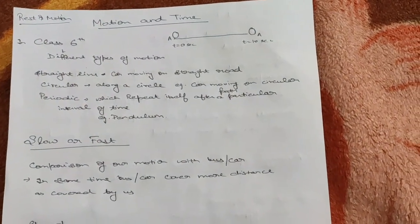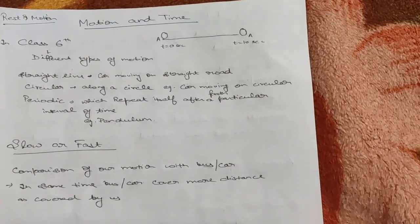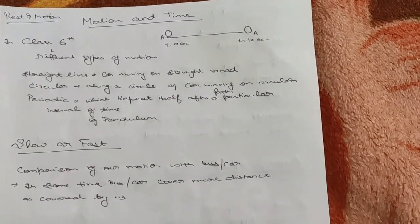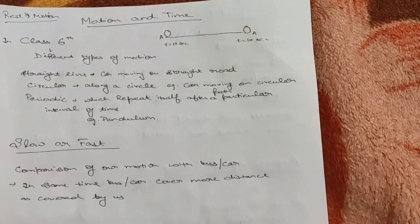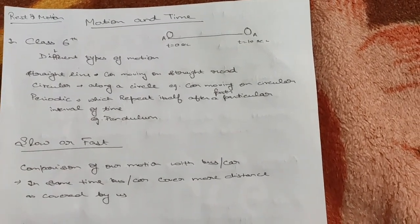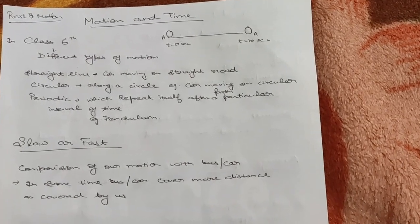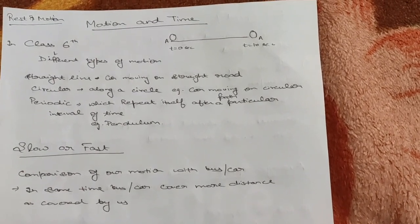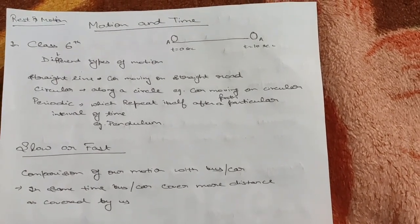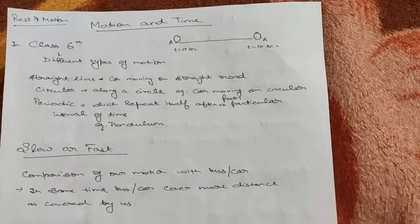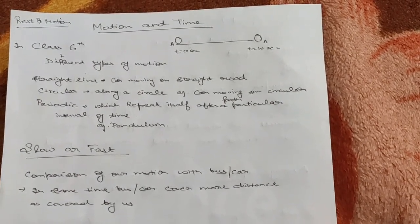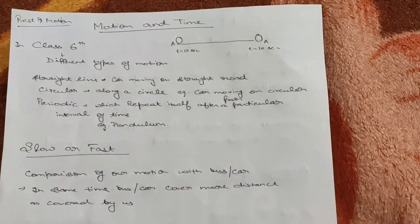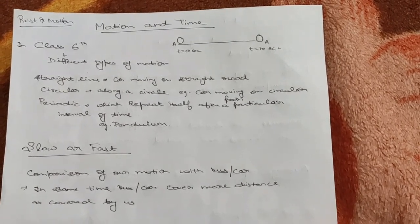When an object is at rest, it simply means that the object does not change its position with respect to time. When we say that the object is in motion, it means the object is changing its position with respect to time. Look at the given figure: object A at t=0 seconds is at a certain position, and after 10 seconds at t=10 seconds it has changed its position — so yes, it is doing motion.